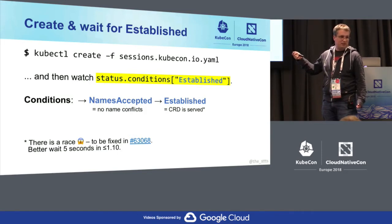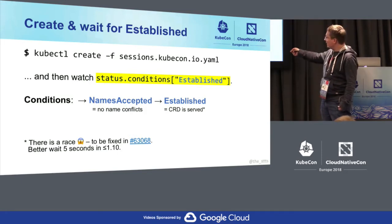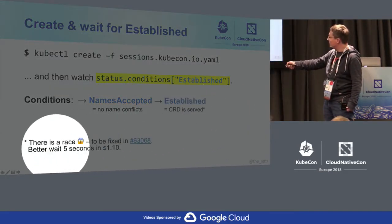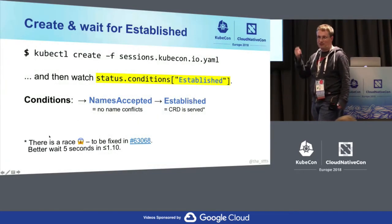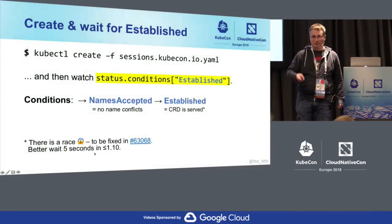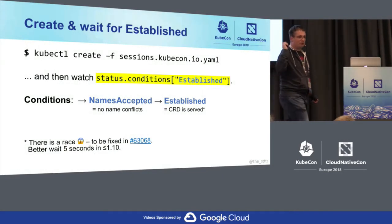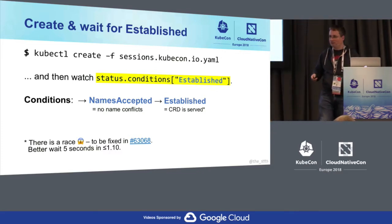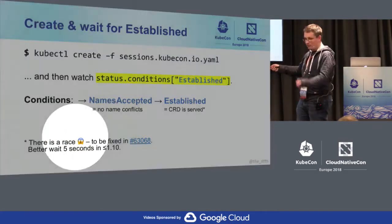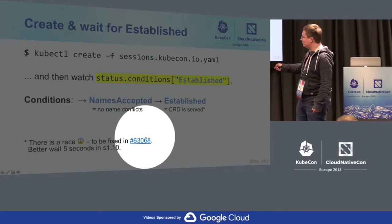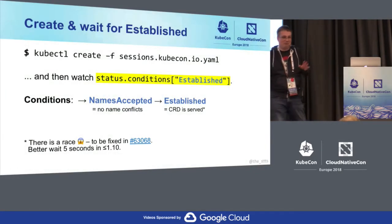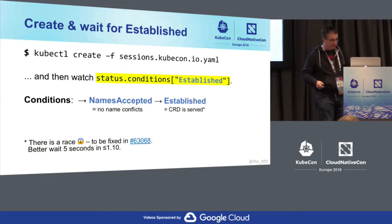There is a race here — this is not HA safe. I note: better wait five seconds until every instance knows about it. It's even broken at the moment for non-HA cases, so wait anyway. This is to be fixed. Marco here has a PR to fix at least the non-HA case. For HA, we need something like checkpointing — a higher-level mechanism we don't have at the moment.